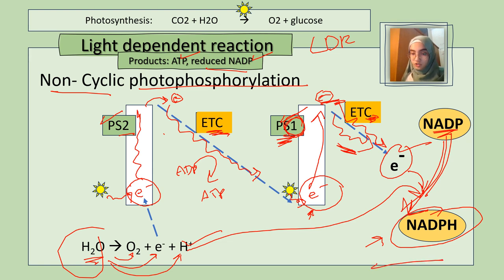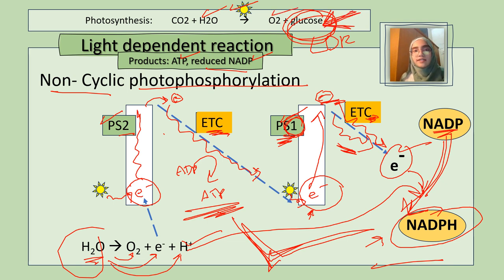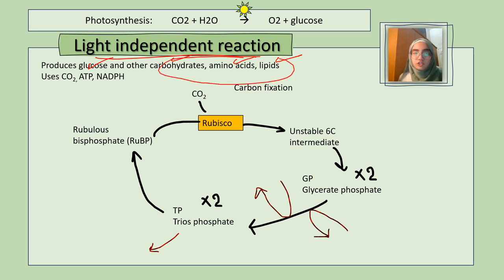Now we know how NADPH (reduced NADP) and ATP are produced. We can move on to the light-independent reaction, where these two products are used to finally produce glucose. The light-independent reaction produces glucose and other carbohydrates, as well as amino acids and lipids, which are used by the plant to function. This is why plants are called autotrophic — they create their own food by the process of photosynthesis.